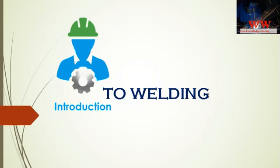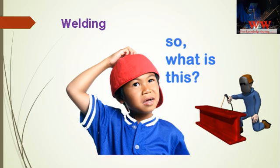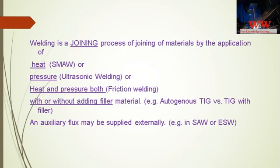So what is welding? Welding is a joining process of materials by the application of heat — for example, as in shielded metal arc welding — or pressure — for example, in ultrasonic welding — or heat and pressure both — for example, in friction welding — with or without adding filler material. For example, autogenous TIG versus TIG with filler. An auxiliary flux may be supplied externally, for example in submerged arc welding or electroslag welding.